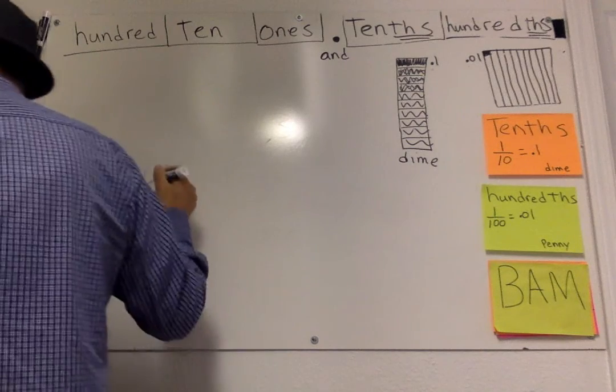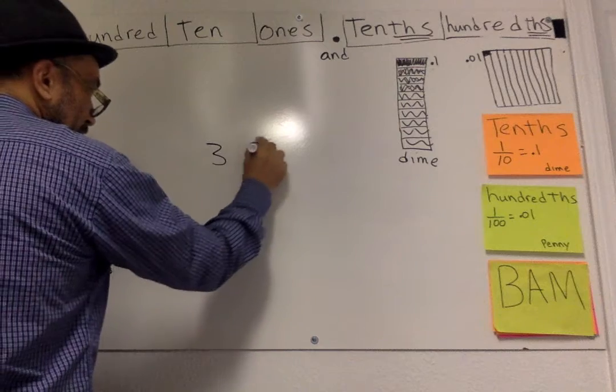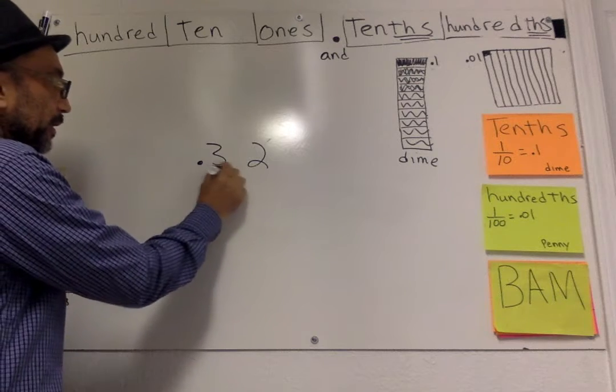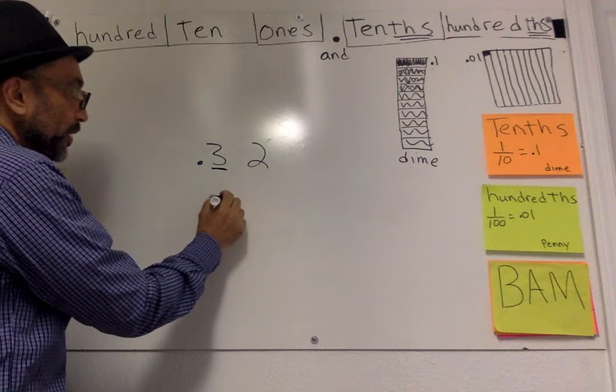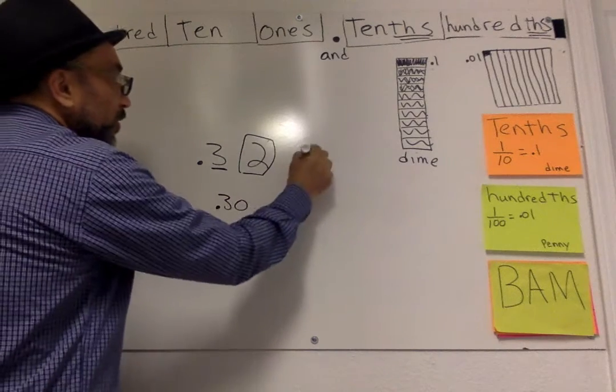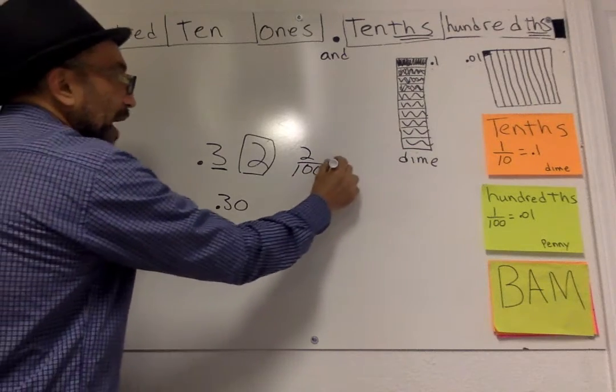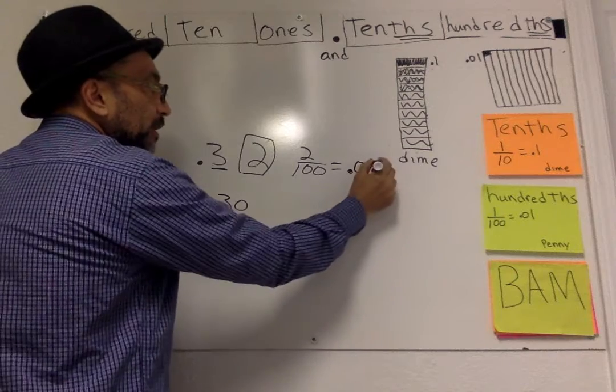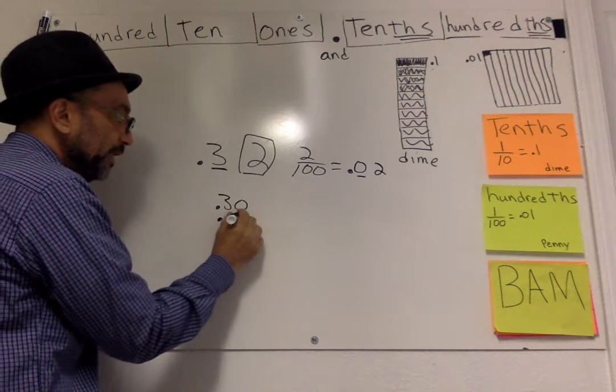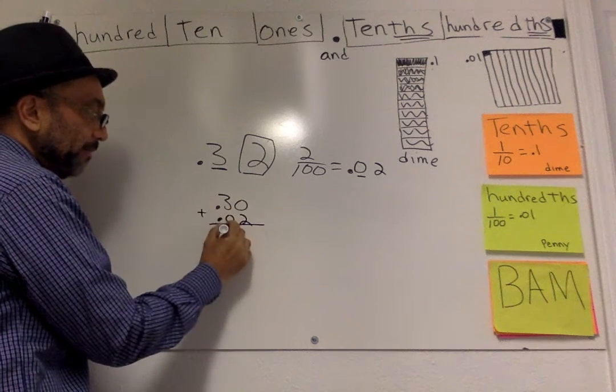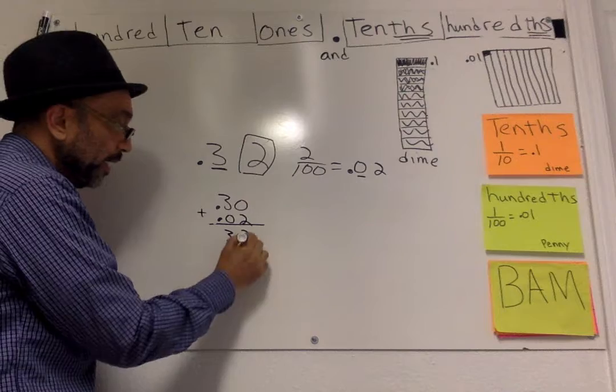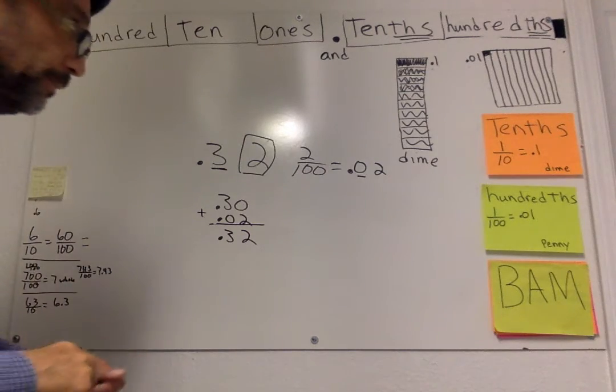For example, we have .32. Now, this represents three dimes. So that would be 30 cents. This represents two hundredths. So that would be .0 dimes and two pennies. That is important. So you would write that .02. So when you add them up, you always line up your place value. So you line up your decimals. That's three twos, .32.